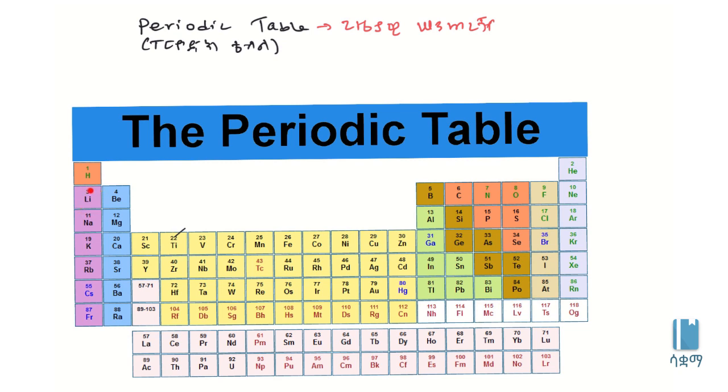Elements have different characteristics and properties. We can classify them based on these properties and organize them accordingly in the periodic table.